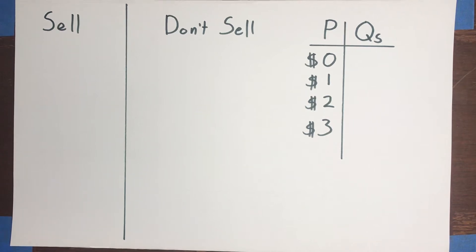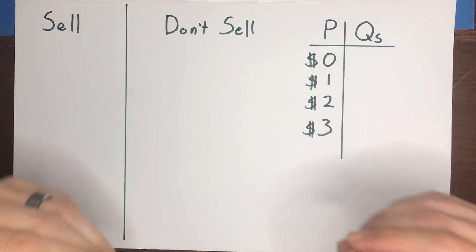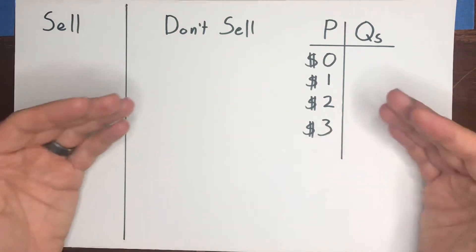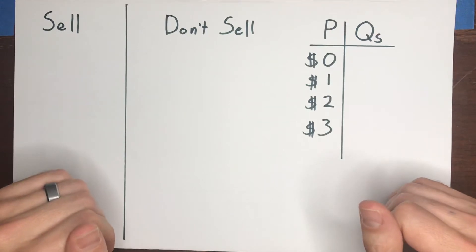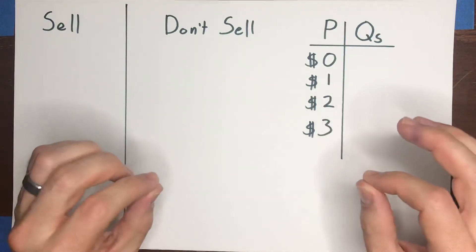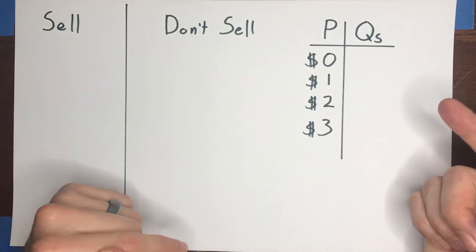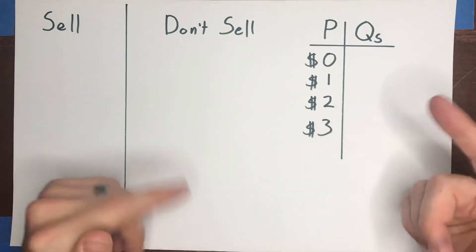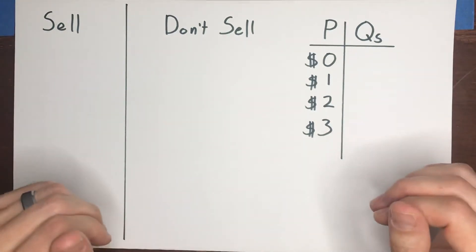Now that we've covered demand, we can turn our attention to supply. And as I mentioned earlier in this video series, once you understand demand, understanding supply is very straightforward because they follow very similar paths of logic. It's just that the logic is reversed. They're symmetrical concepts to one another.